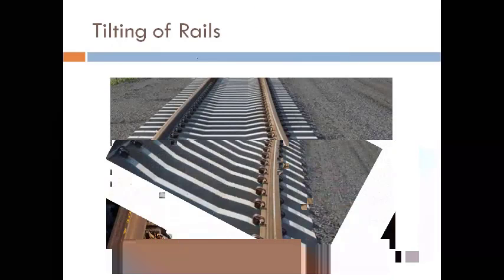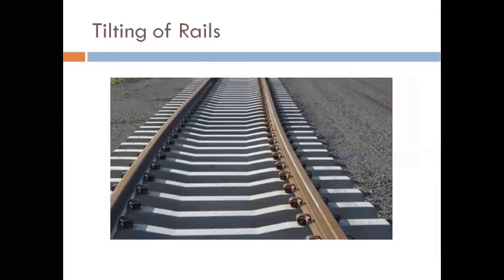The tilt is a minor slope — it is somewhat difficult to see with the naked eye that the rail is inclined at a slope of 1 in 20.